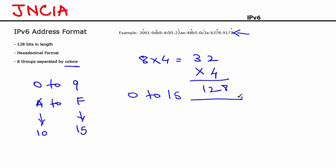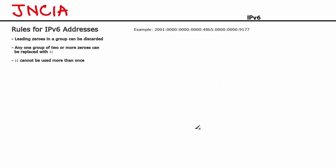Let's look at some of the rules of writing IPv6 addresses. I have an example IPv6 address written here — a very simple one so we can understand the rules in a much more simple manner. The first rule says leading zeros in a group can be discarded. Let's apply this rule to this IPv6 address.